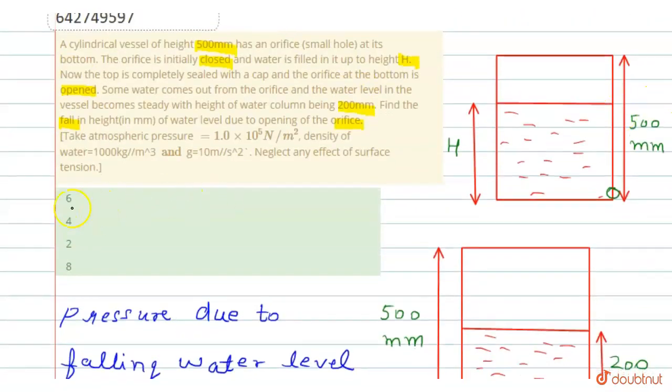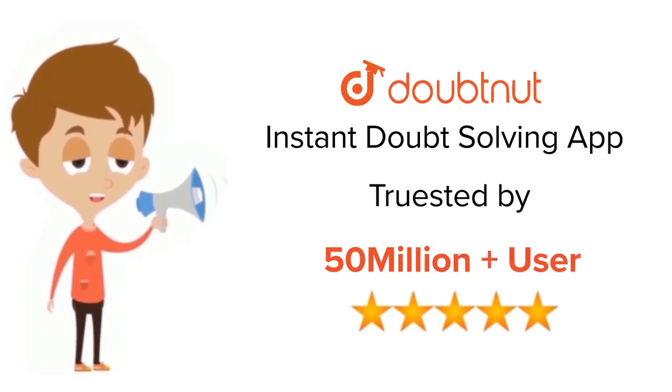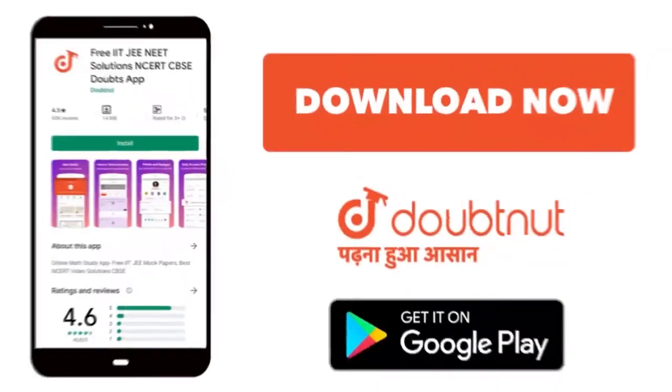Now check the option. First option is correct. I hope you understand the explanation. Link for class 6 to 12, IIT-JEE and NEET level, trusted by more than 5 crore students. Download Doubtnet app today.